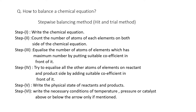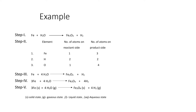Let us take the example of iron reacting with water to form ferric oxide and hydrogen gas. In step one, we keep the reaction as it is. In step two, we count the number of atoms on the reactant side and product side. On the reactant side, iron contains one atom, hydrogen contains two atoms, and oxygen contains one atom.